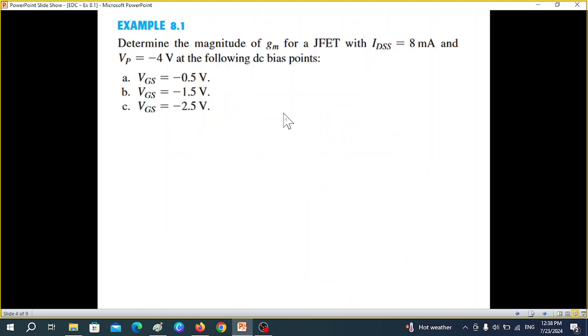Now let's do the example. Determine the magnitude of GM for JFT with IDSS 8 milliampere and VP is minus 4 at the following DC bias points or Q points. So these are not Q points sorry, the DC bias volt point VGS.